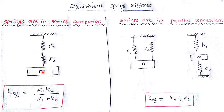Continuing the shortcut: in the third diagram, cutting k2 alone still connects the mass to the support via k1, and cutting k1 alone still connects it via k2 — so that is a parallel connection. For series: k_equivalent = (k1 × k2) / (k1 + k2). For parallel: k_equivalent = k1 + k2.